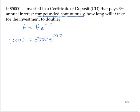So let's first divide by 5,000. So then 2 would equal e to the 0.03 t.